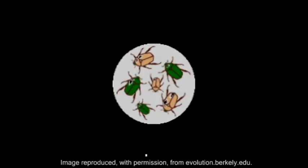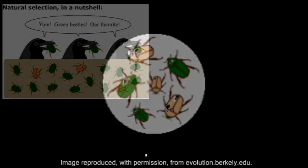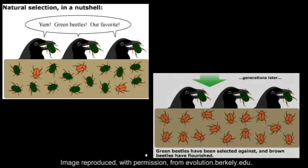Evolution can best be described as descent with modification. In a nutshell, what this means is that different individuals of the same species display different versions of a trait. Because in a given environment, some versions of a trait will make one more likely to survive and mate than others, the genetic composition of a population will change over time in response to its environment.